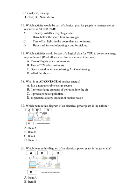Number 19. Which item in this diagram of an electrical power plant is the turbine? A. Item A. B. Item B. C. Item C. D. Item D.